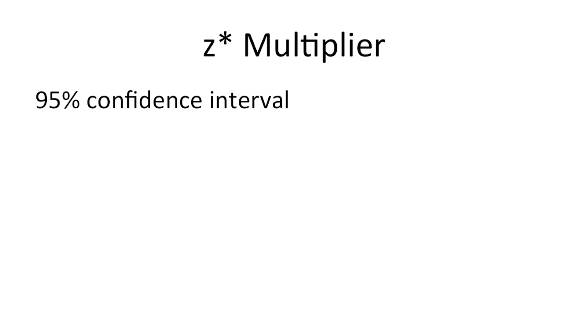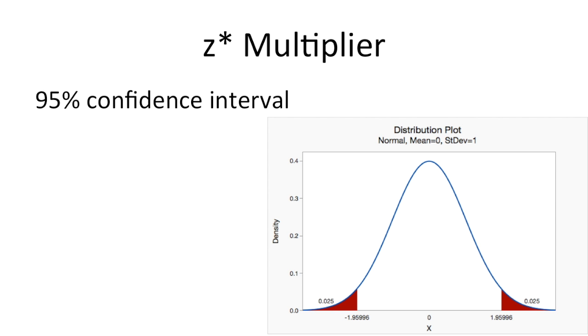First, let's look up our z multiplier. We're constructing a 95% confidence interval, so we need to find the z scores that separate the middle 95% from the outer 5%.